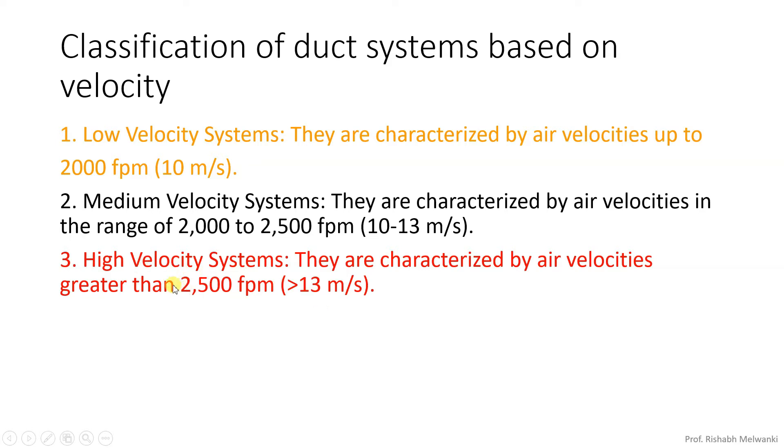High velocity systems are 2500 FPM to 4000 FPM.